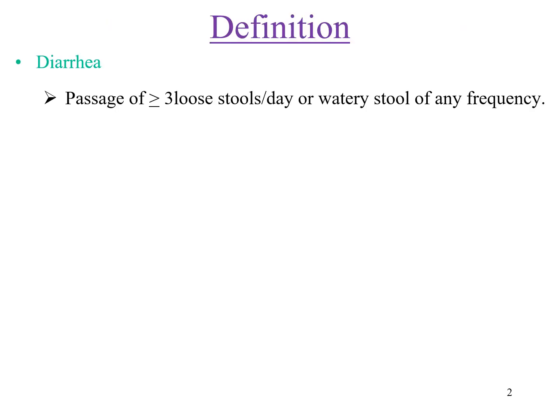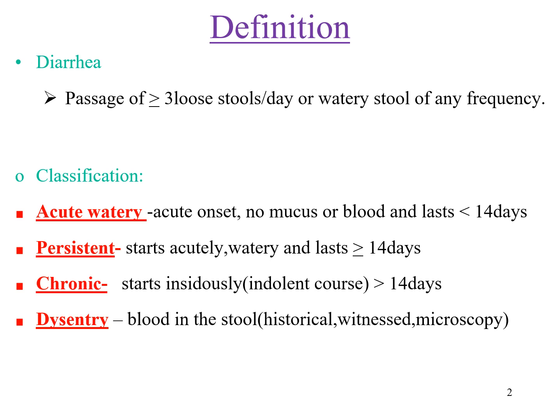Diarrhea is defined as passage of three or more loose stools within 24 hours, or watery stool of any frequency. Diarrhea is classified as acute watery diarrhea if it is acute onset, no mucus or blood, and lasts less than 14 days. It is called persistent if it starts acutely and lasts more than 2 weeks or 14 days. We call it chronic if it starts insidiously and lasts more than 2 weeks.